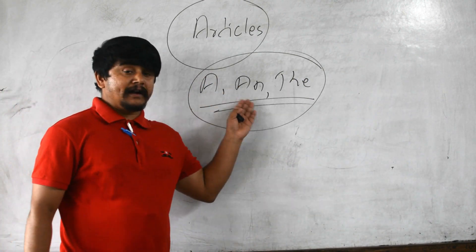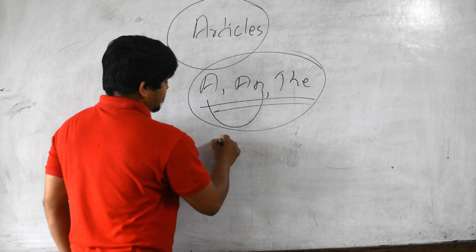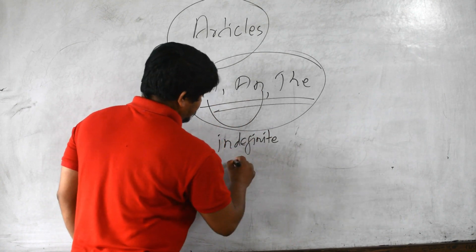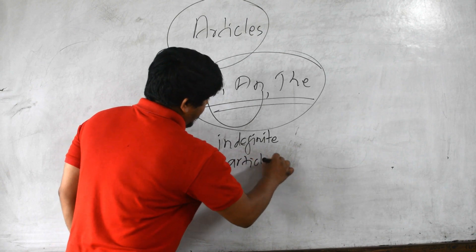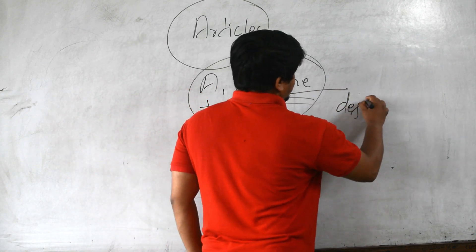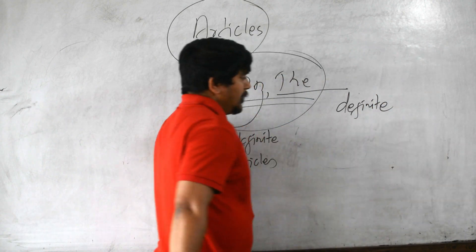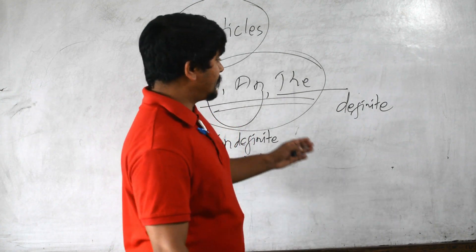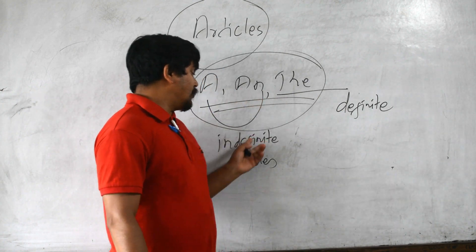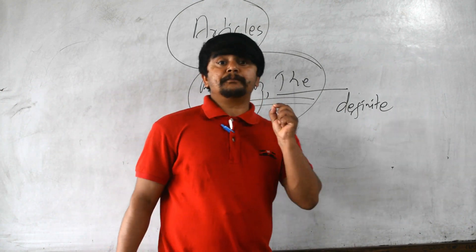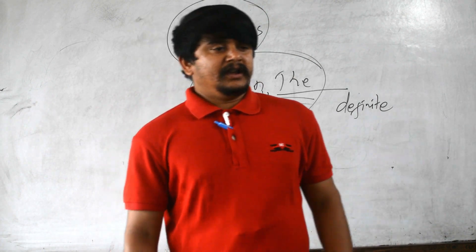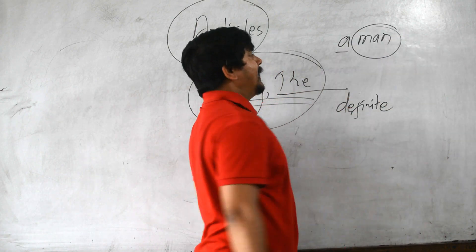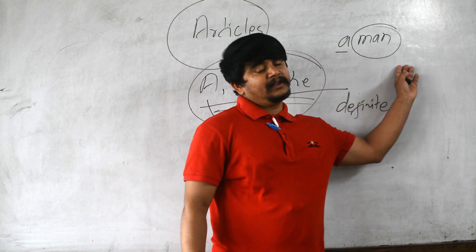If we categorize these three articles, then a and an are said to be indefinite articles, and the is called the definite article. A and an are called indefinite articles because they do not particularize a noun. If you say 'a man,' it can refer to any man.